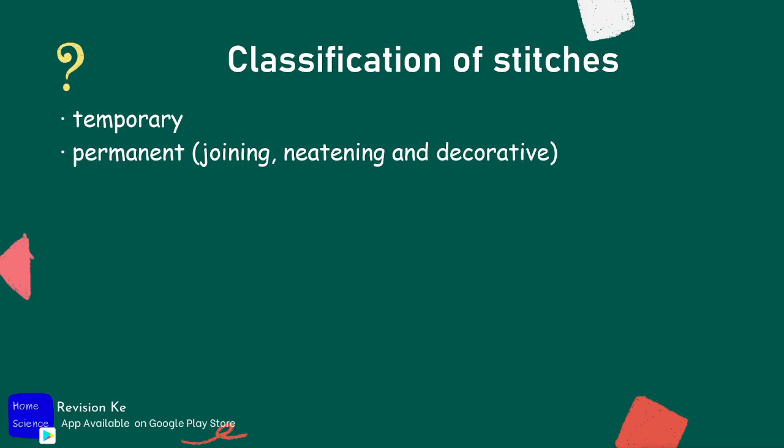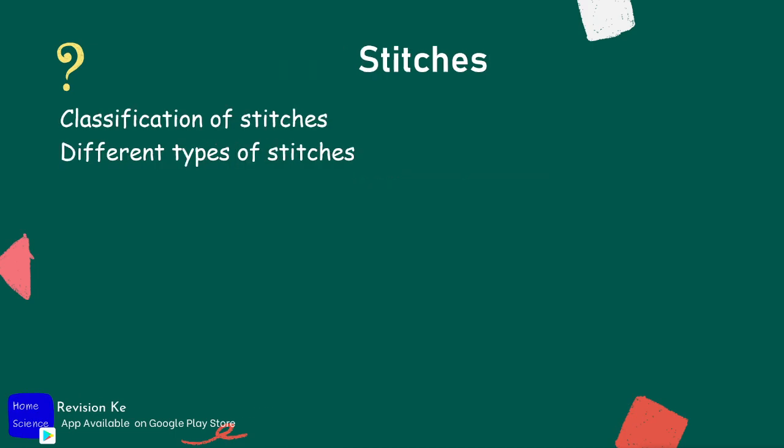The two main classifications are temporary and permanent stitches. Make sure you subscribe to this channel so we can notify you when we discuss these two in depth.